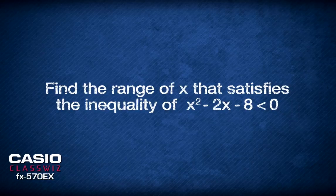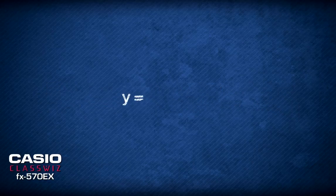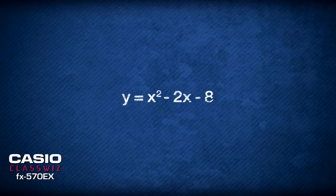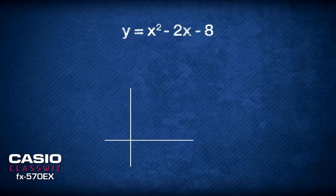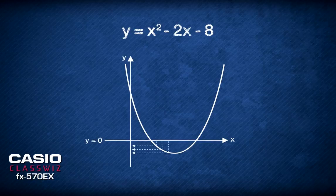Imagine the quadratic equation of y equals x squared minus 2x minus 8. The range that satisfies this inequality are values of x that generate negative values of y.